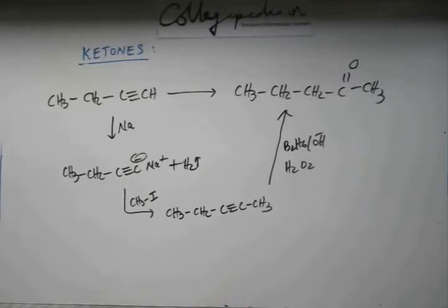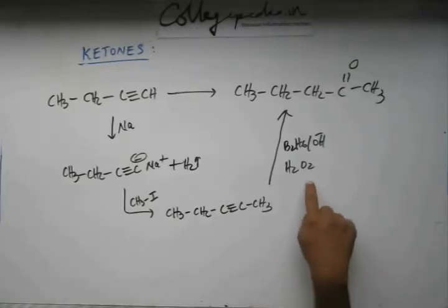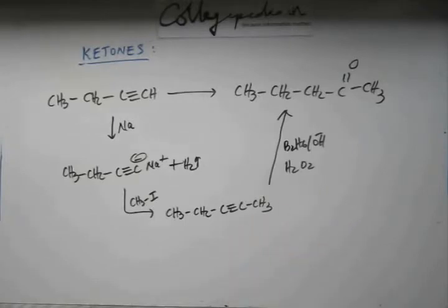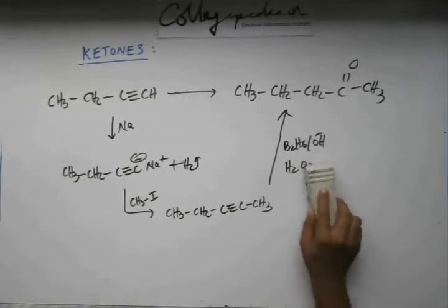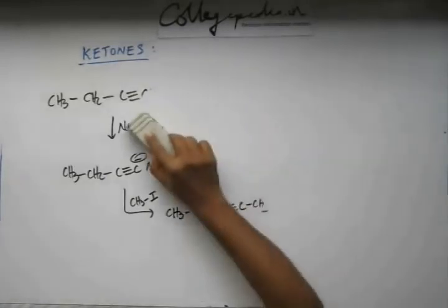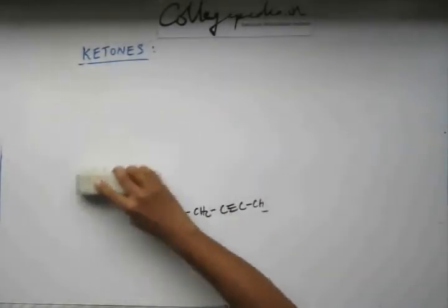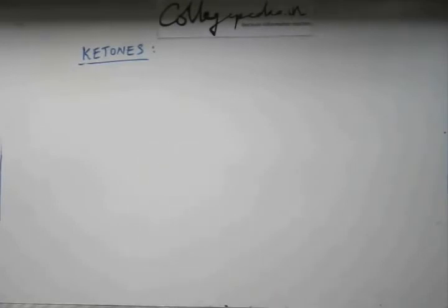So this is hydration of the alkyne using anti-Markovnikov addition, which gives us a C=O on the second carbon. We've learned all these reactions, so this conversion shouldn't be difficult. Let me give you one more conversion problem before we go ahead with the reactions of aldehydes and ketones.